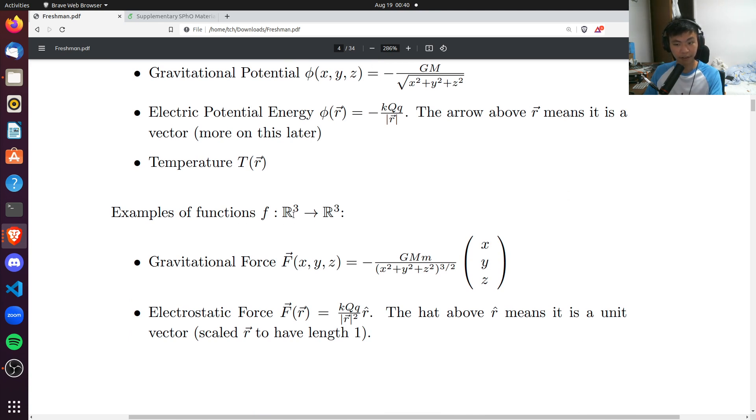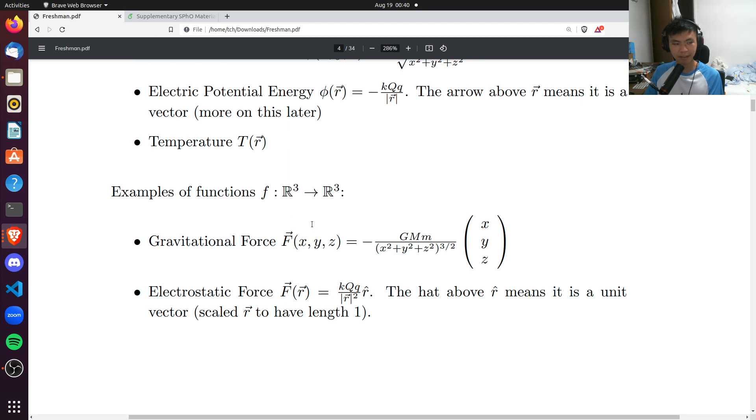Here's where we talk about vector fields. Functions from R3 to R3, they can be used to describe vector fields or force fields, for example. What this means is that, for example, I give the gravitational force function three numbers, x, y, and z. It's going to give me three numbers in return. These three numbers are going to be calculated in a certain way. What these three numbers that it returns represents is the vector at that point in space. In other words, functions from R3 to R3, vector fields, the vector fields associate, for every point in space, a vector.